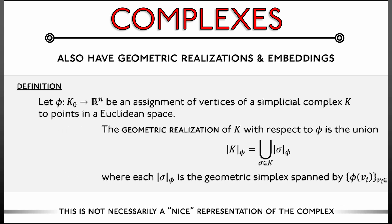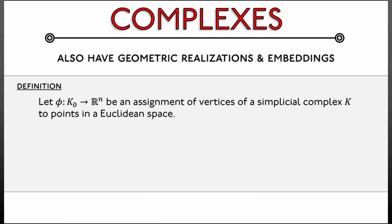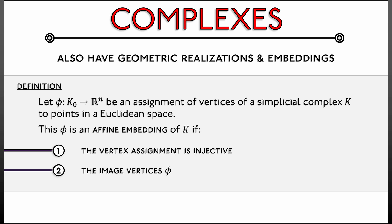So what are we going to do? We're going to give a similar proviso as we gave for geometric simplices. We're going to say that this φ is an affine embedding of the complex K if the following two conditions are met. One, we need the vertex assignment φ to be injective. All the vertices of the complex K go to different places. Two, we need the image vertices to be affine independent. That means, en masse, the entire set of vertices, the entire zero skeleton has to form an affine independent set when you embed it into Rⁿ via φ.